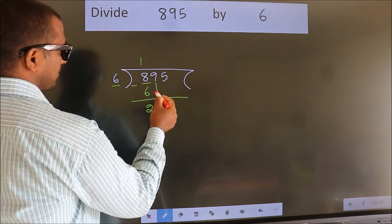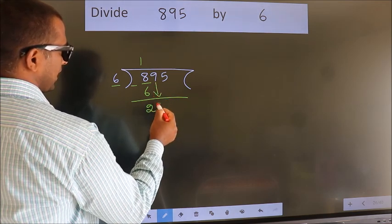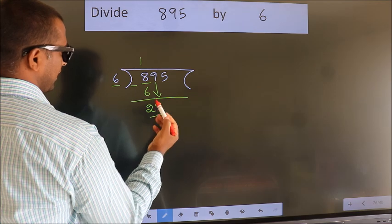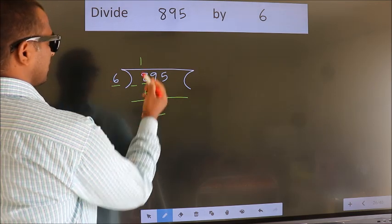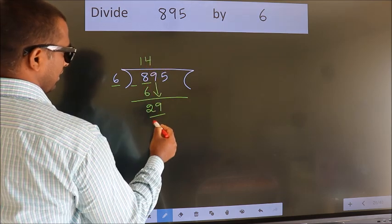After this, bring down the beside number. So 9 down. So 29. A number close to 29 in the 6 table is 6 times 4 equals 24.